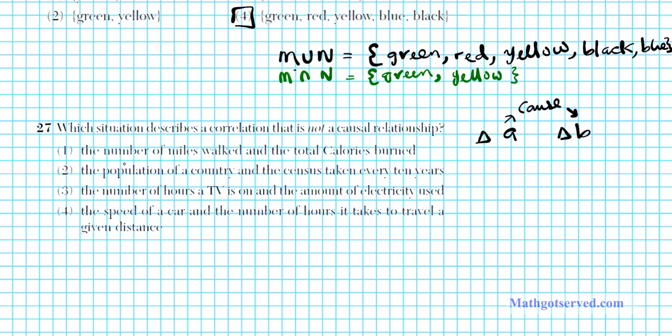For option one, we have number of miles walked, that's our A, and we have total calories burned, that's our B. The number of miles you walk, does that change the number of calories you burn? The answer is absolutely. The fewer miles you walk, the fewer calories you burn, and the more miles you walk, the more calories you burn. So this is a causal relationship. Remember, we're looking for what is not.